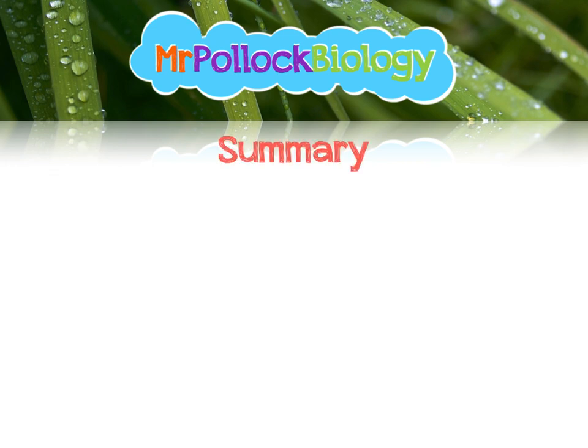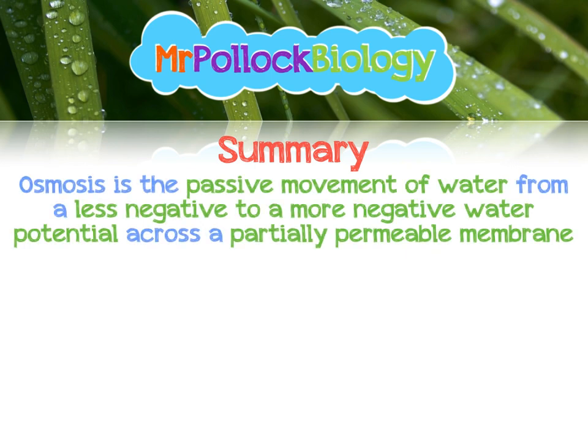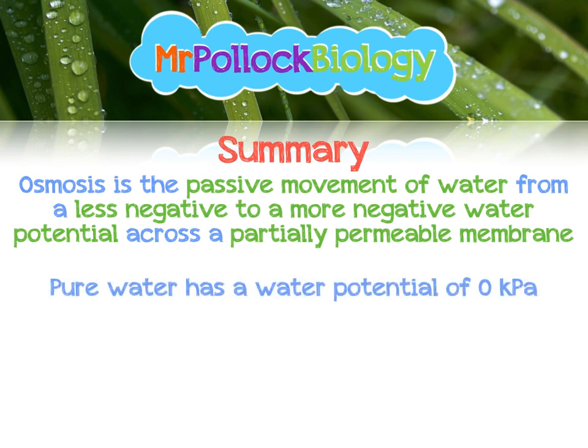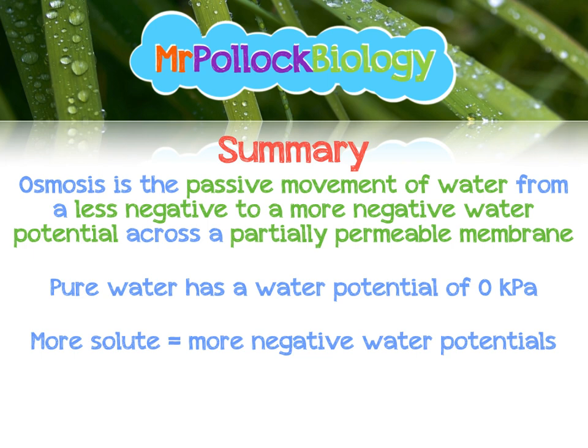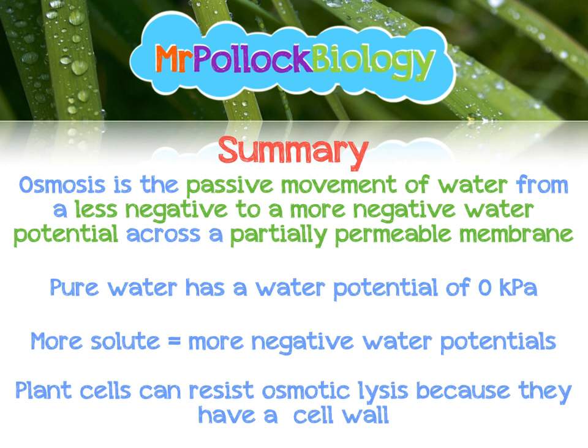Let's summarise. Osmosis is the passive movement of water from a less negative to a more negative water potential, and this occurs across a partially permeable membrane. Pure water has a water potential of zero kilopascals, and the more solute we add to water, the more negative the water potential becomes. Plant cells can resist osmotic lysis because they have a cell wall. This links really closely to cholera and oral rehydration solutions, so keep your eyes peeled for a video in the future. Thanks very much for watching.